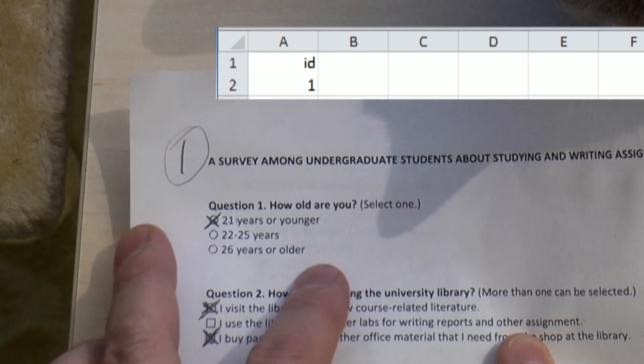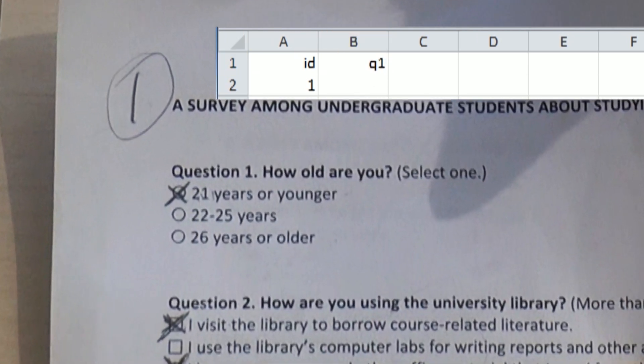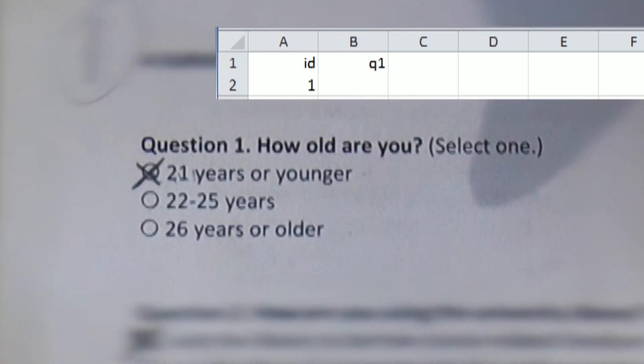My next header is Q1 for question 1, where the respondents had to select one out of three responses. I code these responses 1, 2 and 3. The respondent selected the first one, so in this example I will code this with the digit 1.